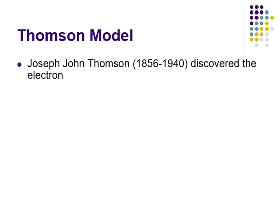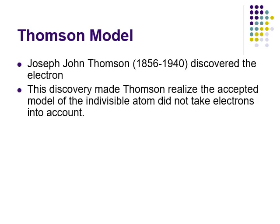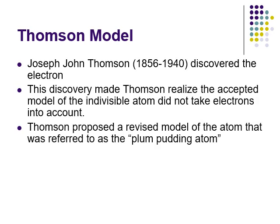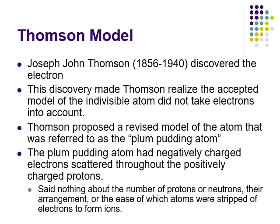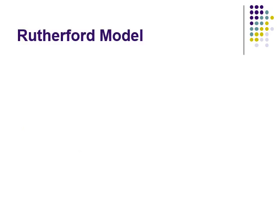Next came the Thomson model, which gave us the plum pudding model of the atom. In this model, negatively charged electrons were scattered throughout a positively charged mass. No one was really sure what the protons were doing, which is one of the reasons this model did not have a lot of lasting power.